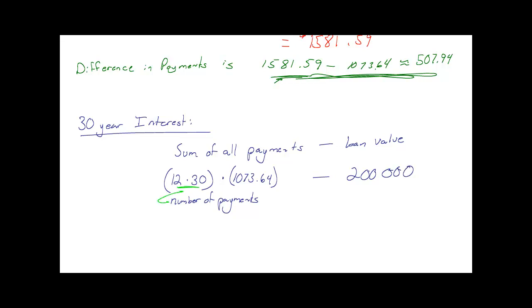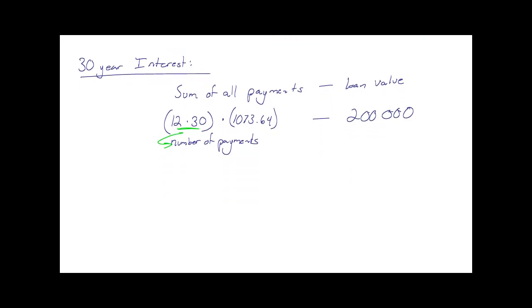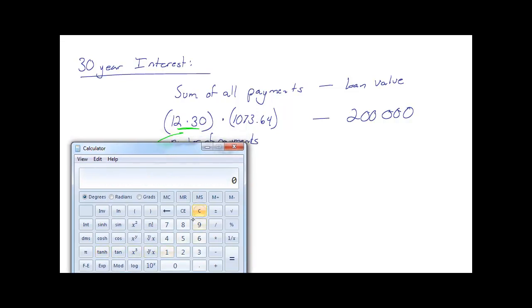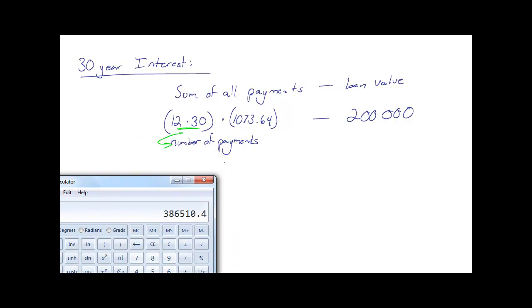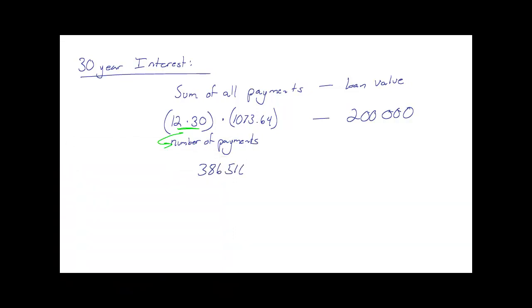12 times 30 times $1,073.64 equals $386,510.40. When we subtract $200,000, that's $186,510.40 in interest on my 30-year loan. It's almost the same value as the loan we took out—we're paying as much on interest as what we borrowed from the bank.